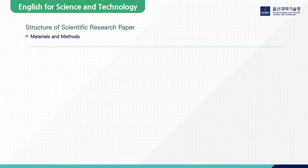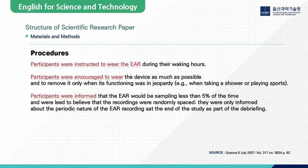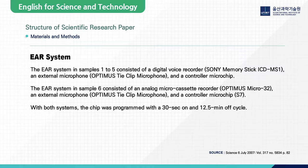This is part of the materials and methods section of a research paper on behavioral science. As you see the subsections here, we have descriptions about the research participants, how the samples are pulled, and descriptions of steps that the researchers took. Here is another subsection. The subsection title says EAR system, which describes the kind of equipment used for the experiment.